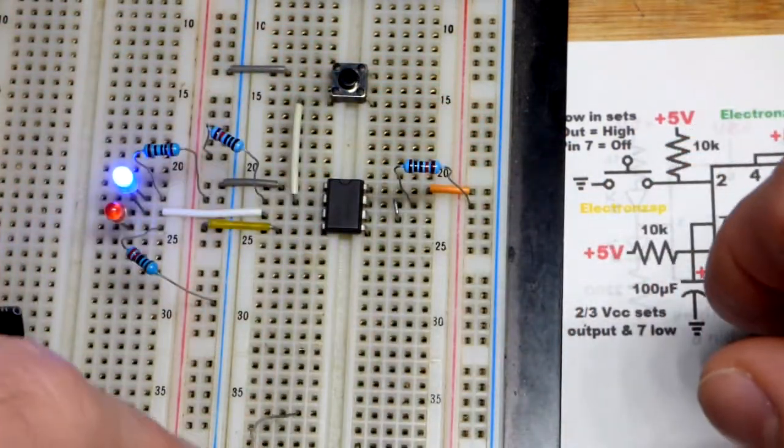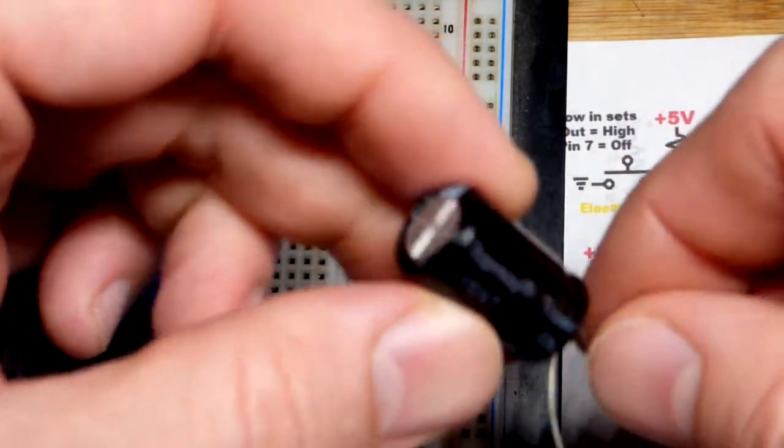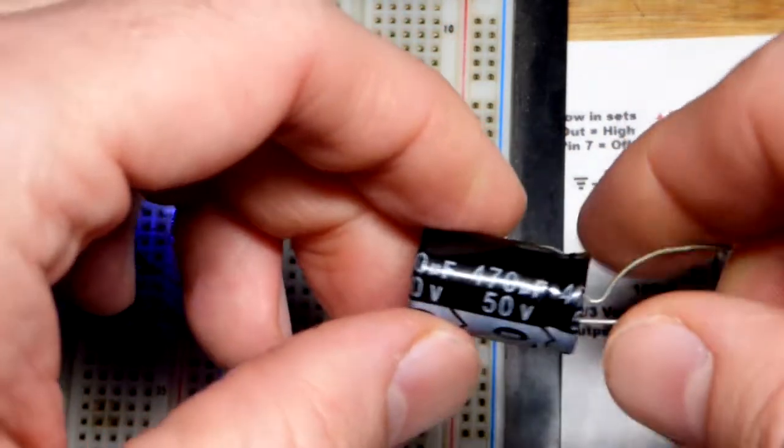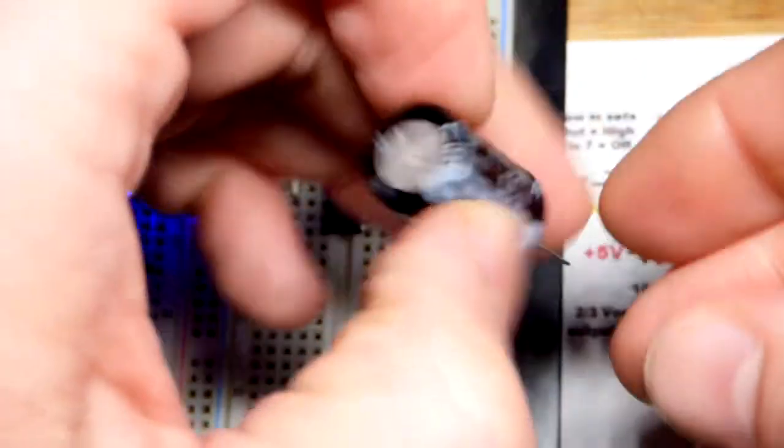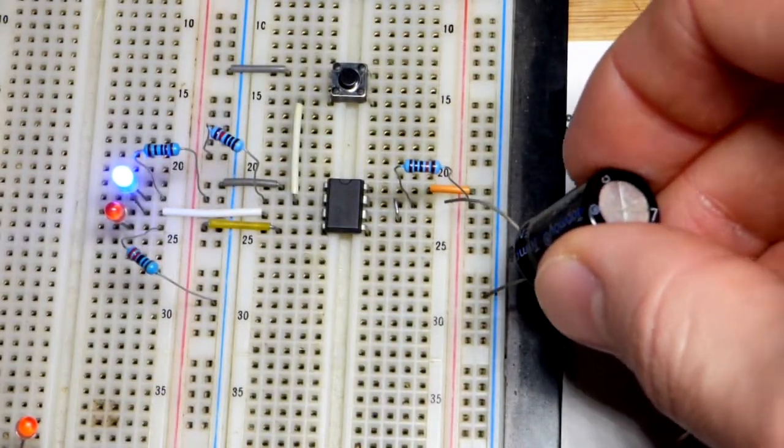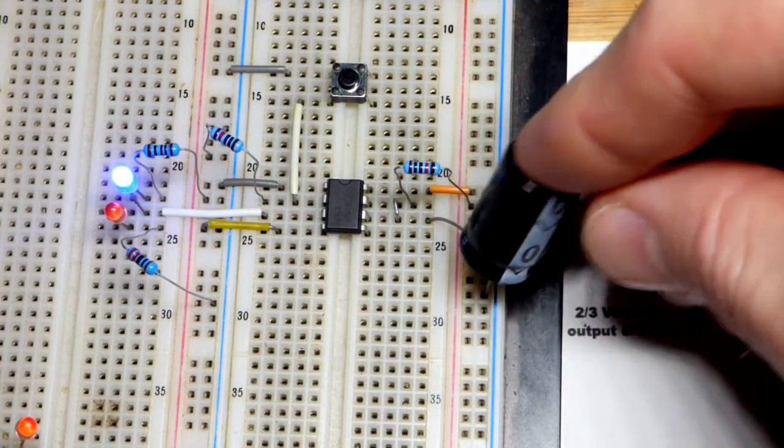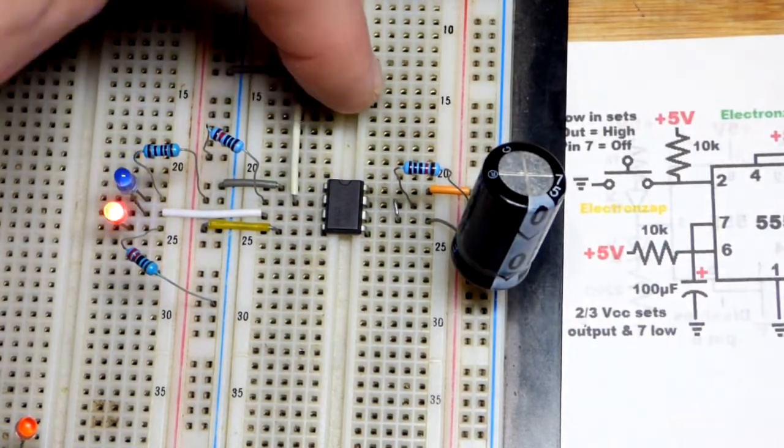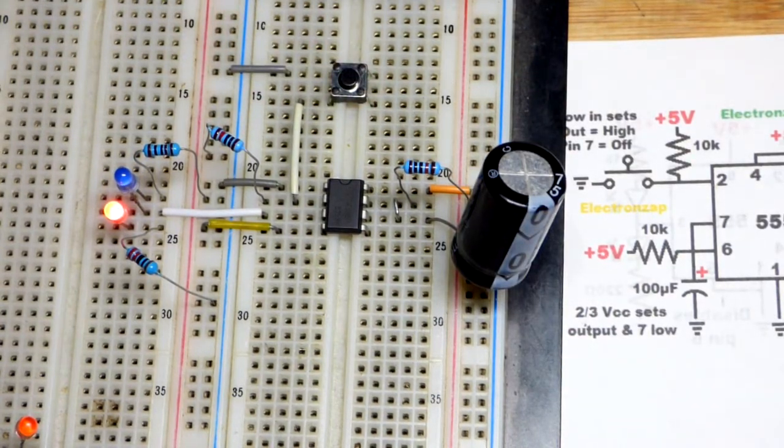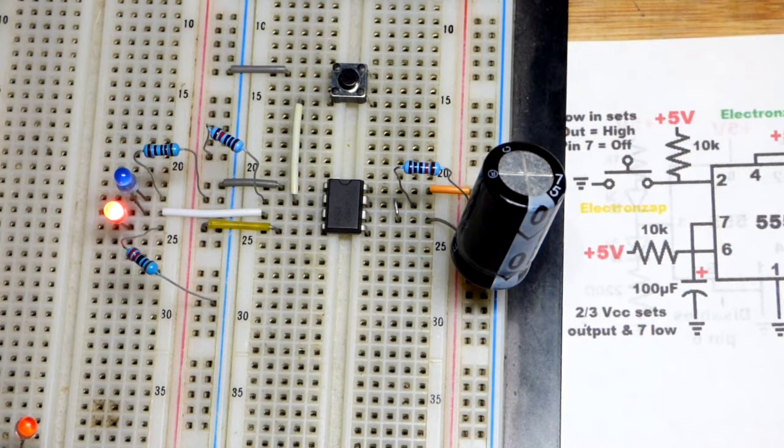If we want to make it about five times as long, I also have these 470 microfarad capacitors. They store almost five times as much charge to get to the same voltage. We'll just swap it out like that. Now you can see when I press the button it's going to take about five times longer for the output to go back to low.